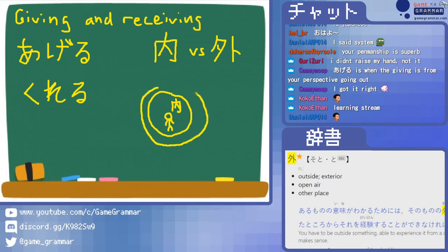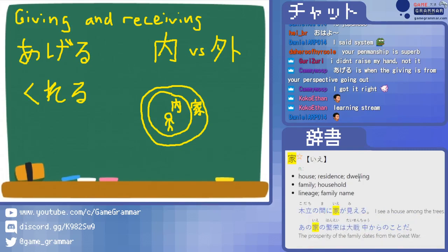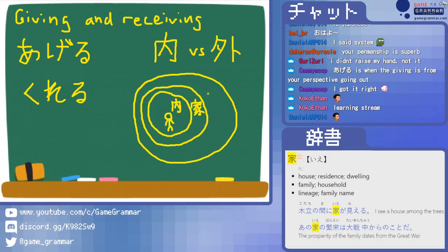Then there's a level beyond that — probably something like your family, your house, people that live with you. Think of this as your family. Then the next circle might be your neighborhood or your company. And then as we move out we get more and more removed. Outside here, let's call this soto. You can have infinite levels if you wanted to differentiate, but for simplicity, let's look at it like this.